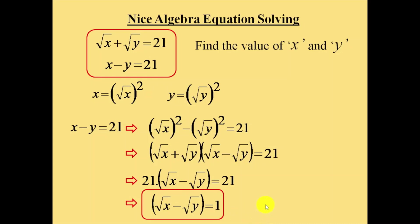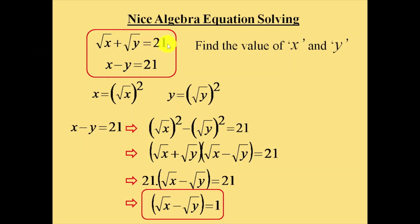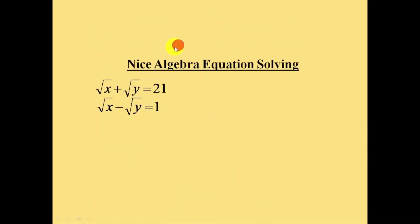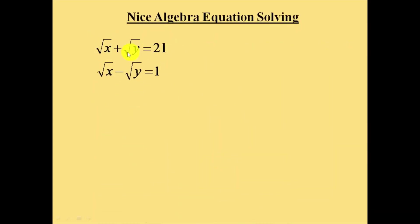So we have found that square root of x minus square root of y equals 1. From the problem itself, square root of x plus square root of y is equal to 21. We will now use these two equations together — the one we just calculated and the first equation provided in the question.